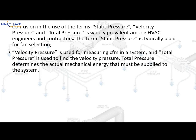Confusion in the use of the terms static pressure, velocity pressure, and total pressure is widely prevalent among HVAC engineers and contractors. Static pressure is typically used for fan selection; velocity pressure is used for measuring CFM in a system; and total pressure is used to find the velocity pressure. Total pressure determines the actual mechanical energy that must be supplied to the system.